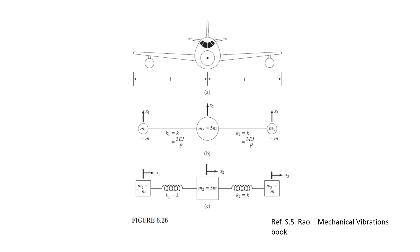The wings are connected by springs — two springs and three masses — and x1, x2, x3 are the three degrees of freedom. This is how the front portion of an aeroplane is modeled into a three-degree of freedom system. These should not be treated as abstract rectangular boxes with m1, m2, m3 written in them. They have a direct relation with the physical system. These are modeled from physical systems like an aeroplane, drilling machine, or any mechanical system — understanding this is very important.